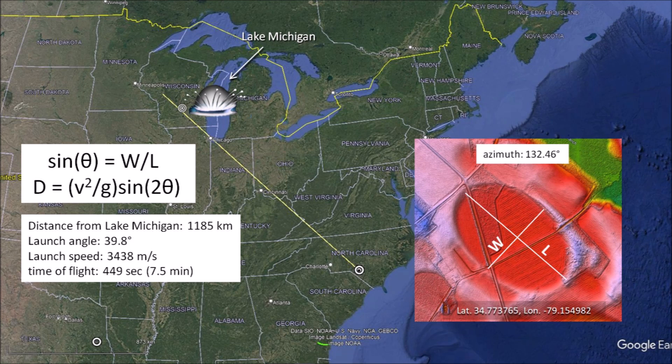The trajectory of the projectile has to be adjusted for the Coriolis effect, which is the distance that the Earth rotates while the projectile is in flight. The launch point is about 120 kilometers to the east of the convergence point to compensate for the flight time of 449 seconds. The launch point of the ice projectile was in Lake Michigan at a distance of 1,185 kilometers from the basin.